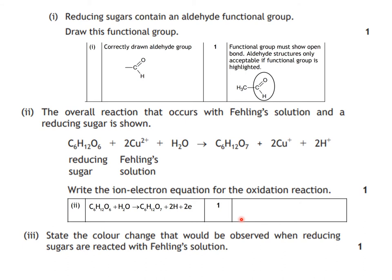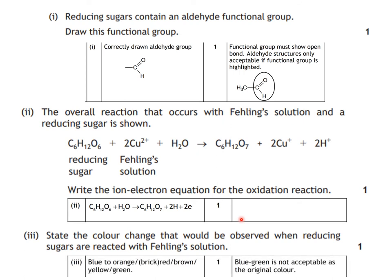State the colour change that would be observed when reducing sugars are reacted with Fehling's solution. It is blue to orange — or brick red, a term you may have come across in S1, S2, and S3, especially in biology. Note that blue-green is not acceptable as the original colour. You have to say it is blue — that really nice blue colour due to the Cu2+ ions.